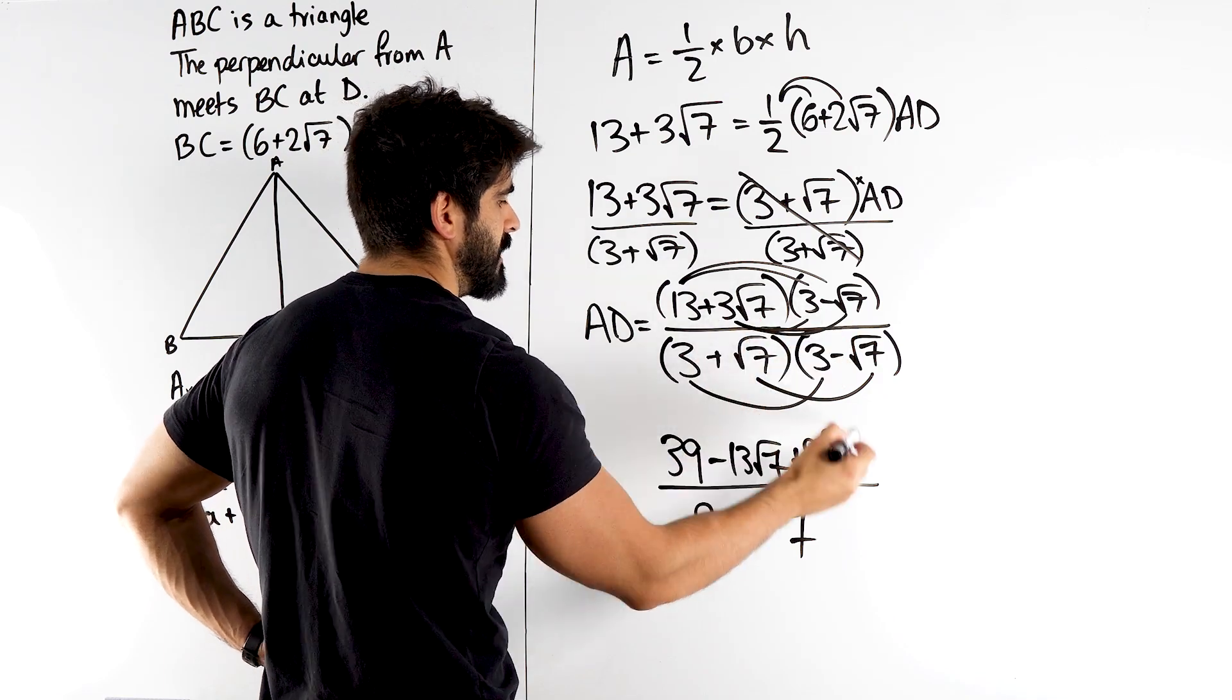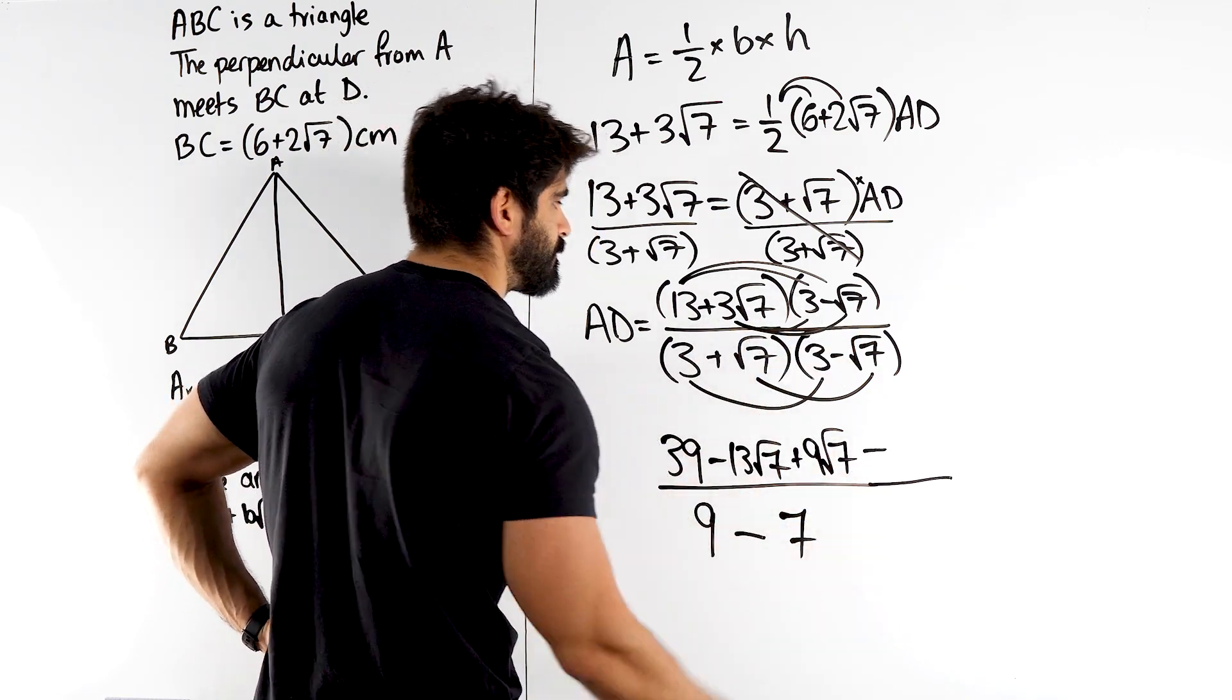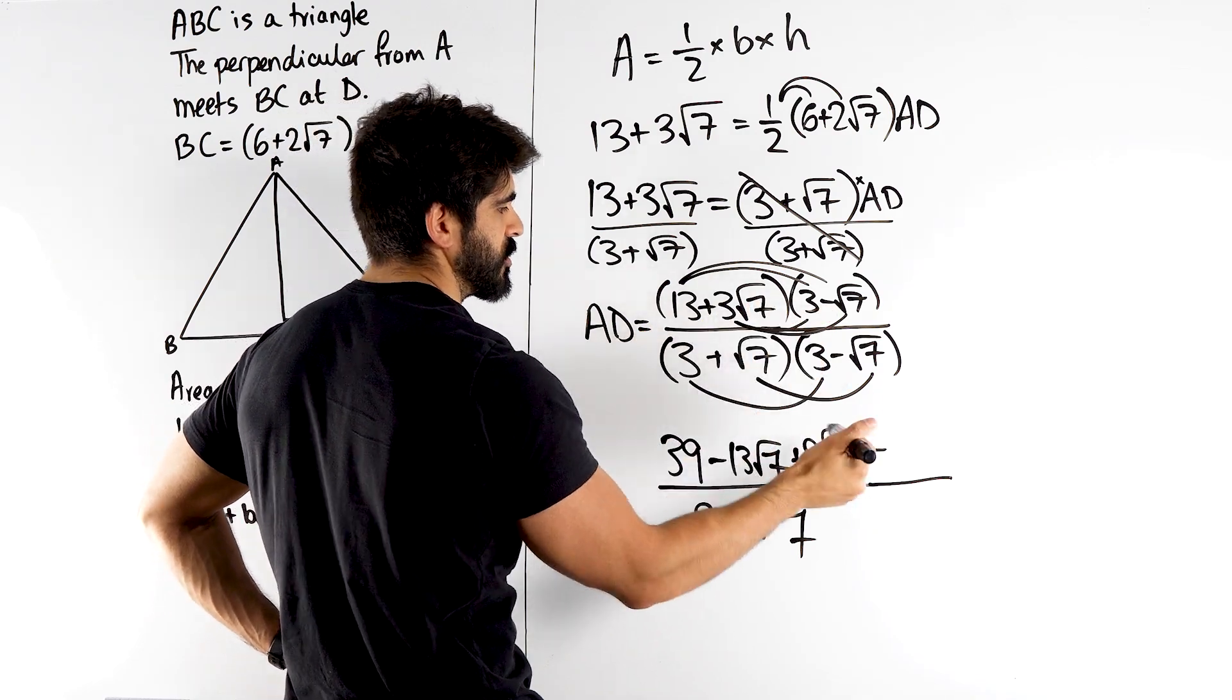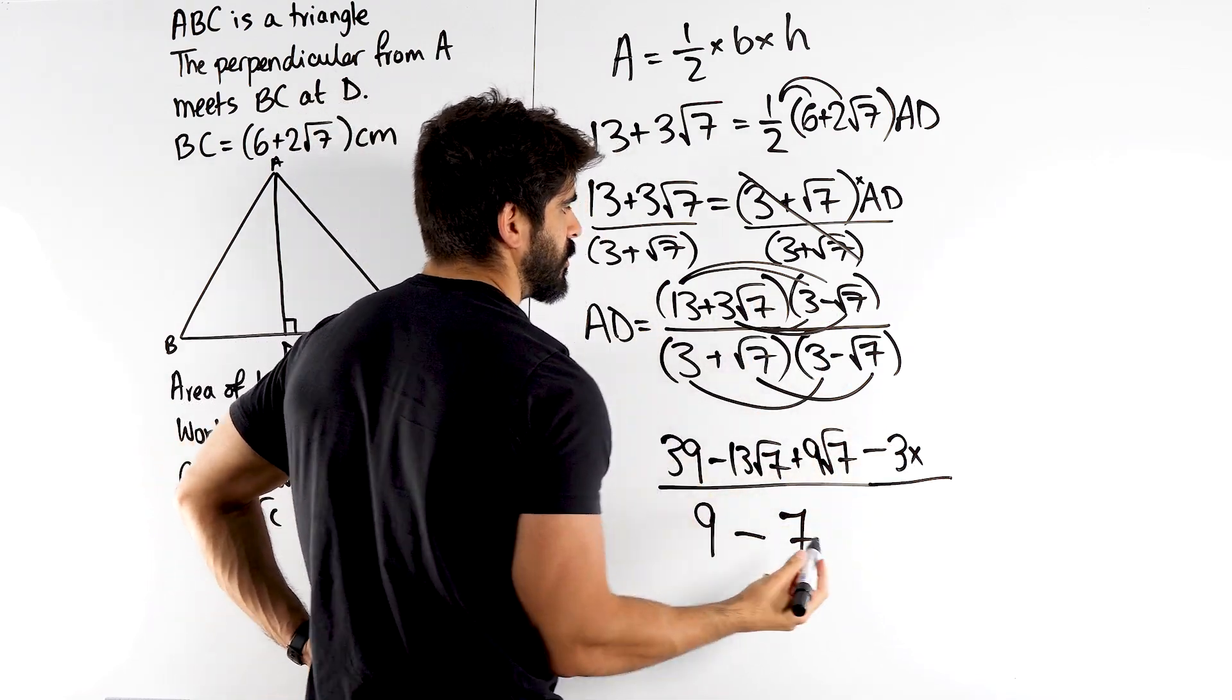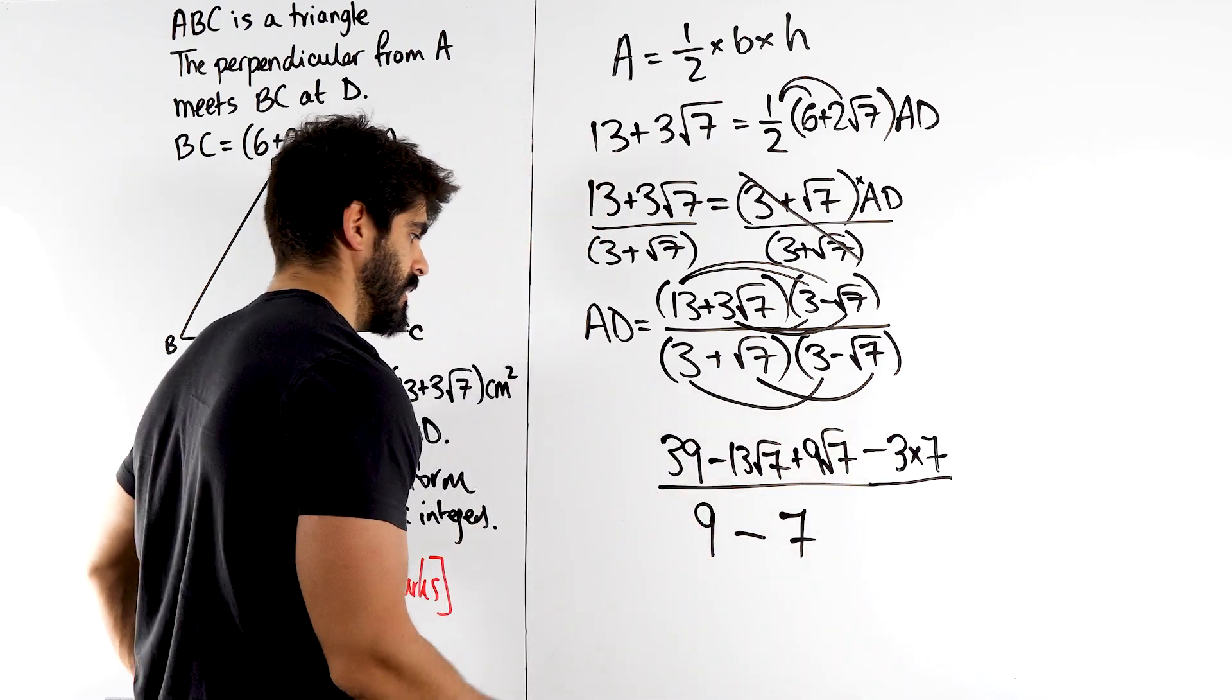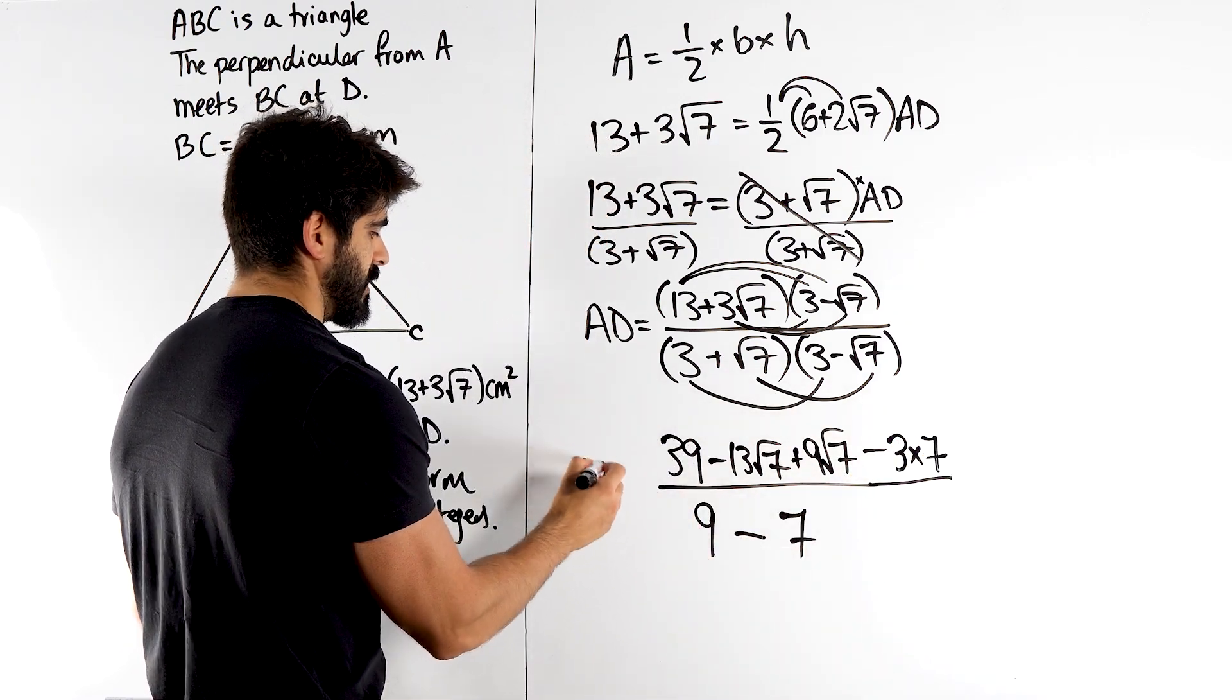Now, here we have to be careful. We have a positive minus is a minus. Then we have 3 times by 1, which is just 3. Times root 7 times root 7 is 7. Okay, so we have AD as all of that.